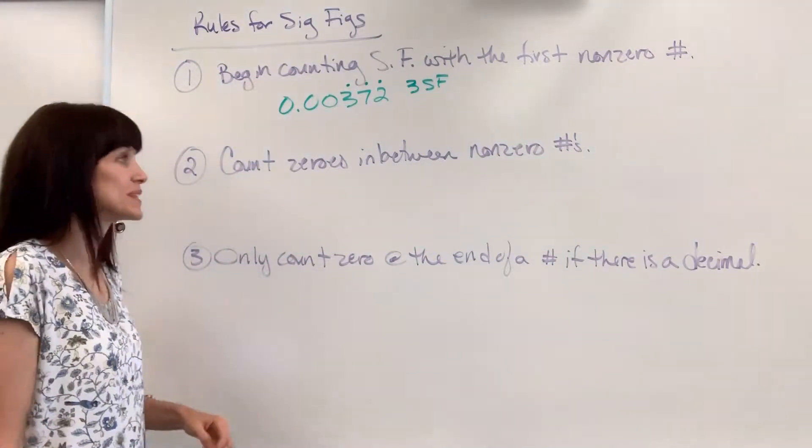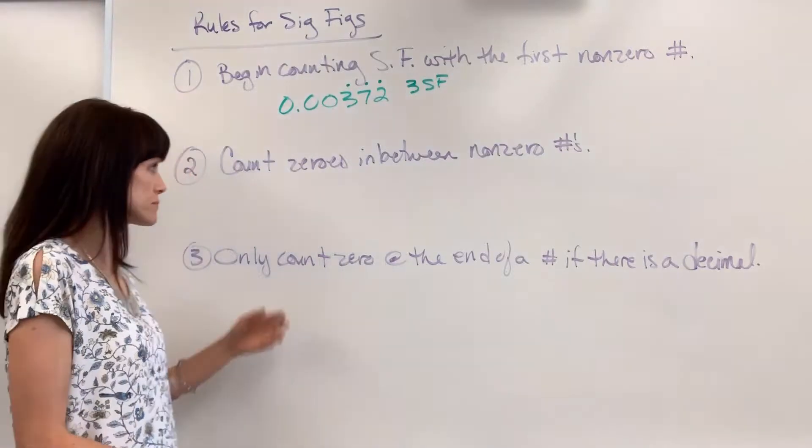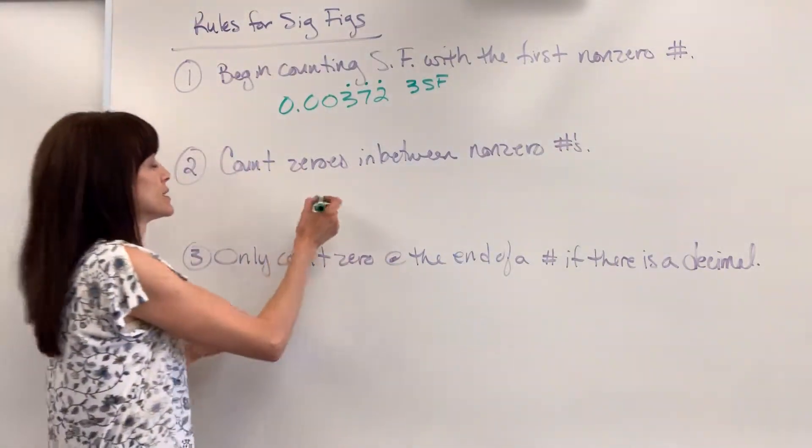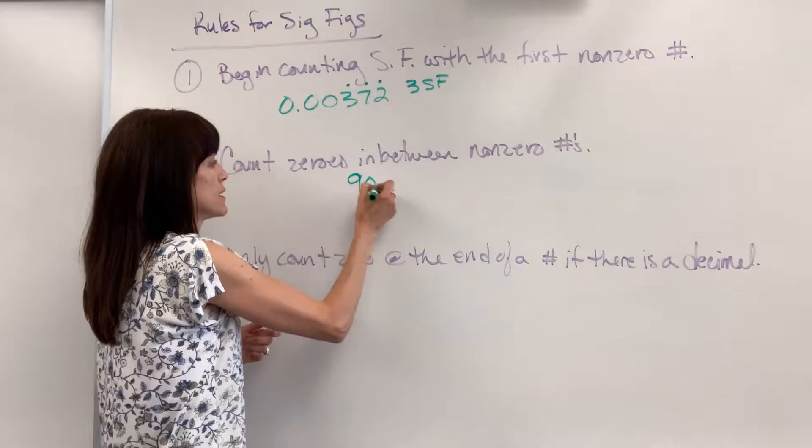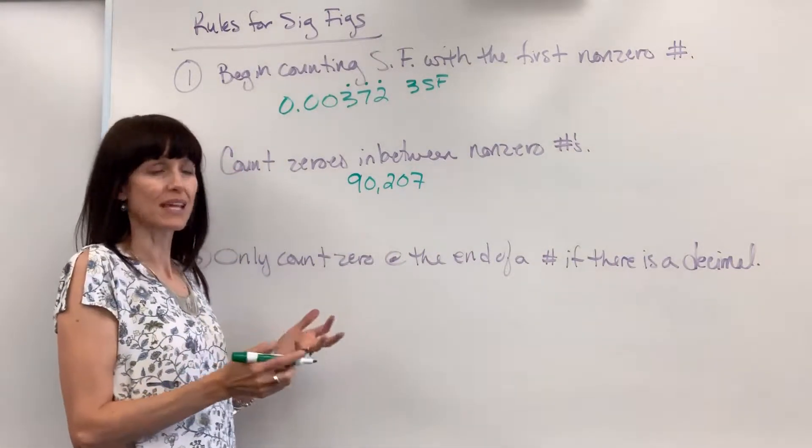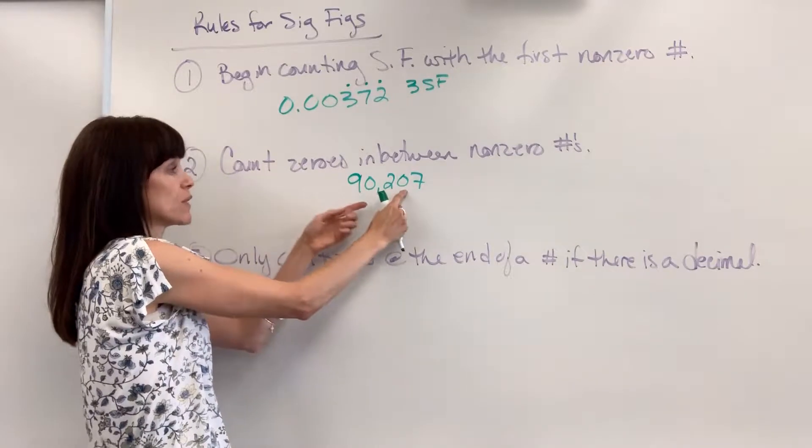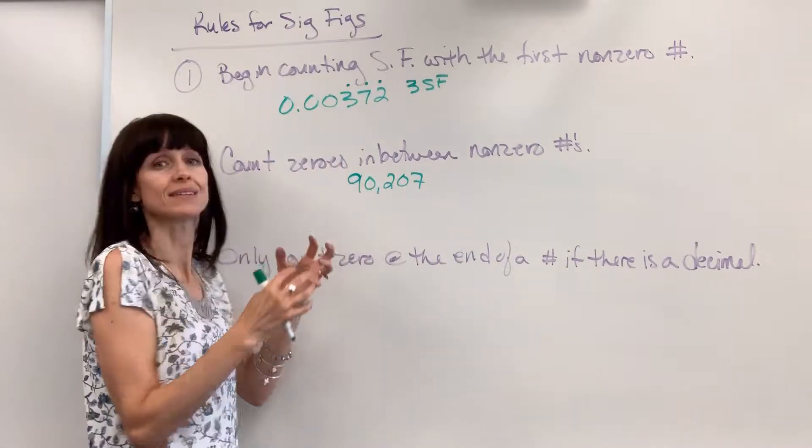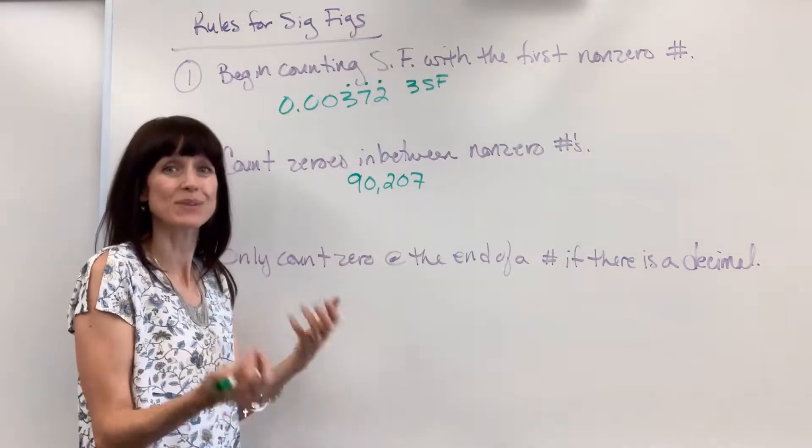Rule number two. This is the easiest one for sure. Count zeros in between non-zero numbers. Let's say that we have 90,207. So let's count our sig figs. I see two zeros, and they are both flanked, surrounded by non-zero numbers, so we can count them.